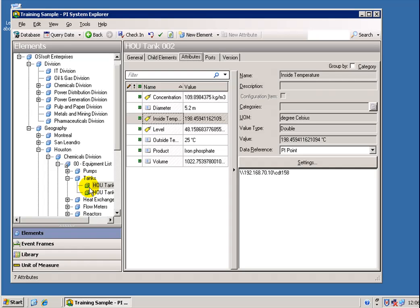You can think of AF as a kind of a map. AF simply points you to where that data is stored. The PI System is completely independent of AF.